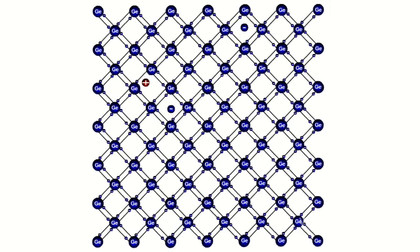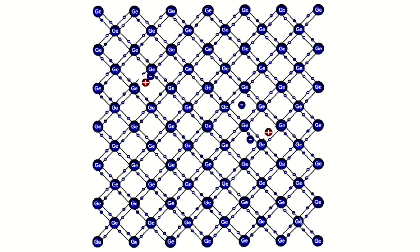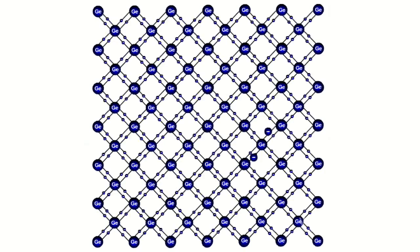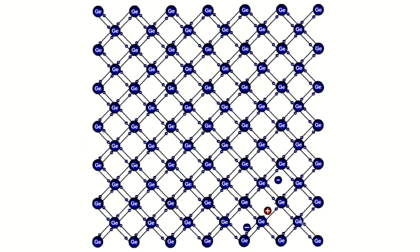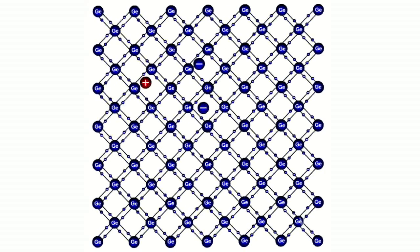The electric field regulates electron and hole movement, i.e., electrical current occurs. Movement of an equal number of holes and electrons ensures electrical current in pure semiconductors. Such type of semiconductor conductivity is known as intrinsic conduction.